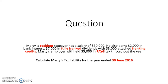We have a basic income tax calculation question here for tax law at UTS. Marty, a resident taxpayer, has a salary of $30,000. He also earned $2,000 in bank interest, $7,000 in fully franked dividends with $3,000 attached franking credits. Marty's employer withheld $5,000 in PAYG tax throughout the year. Calculate Marty's tax liability for the year ended 30 June 2016.